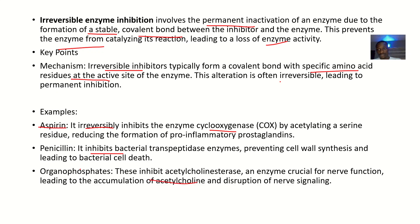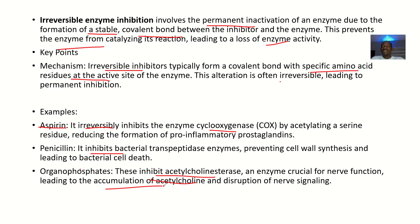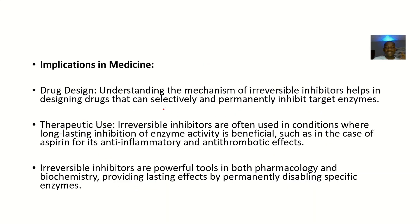Organophosphates inhibit acetylcholinesterase, an enzyme crucial for nerve function, essentially paralyzing insects — which is why spraying insecticide kills insects, because their nerves are no longer functioning. Inhibition of acetylcholinesterase leads to accumulation of acetylcholine and destruction of nerve signaling, since the enzyme that would break down acetylcholine at the synapse is no longer active.